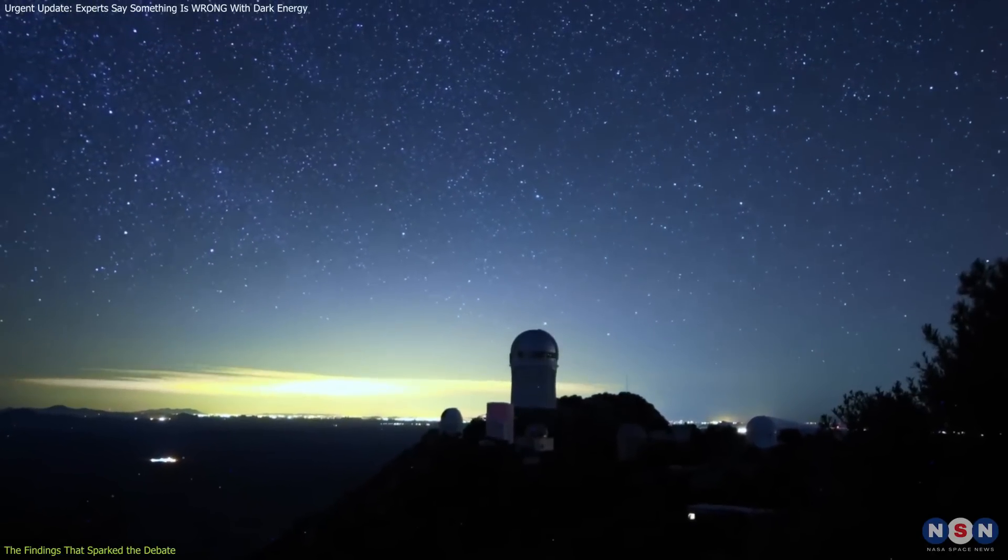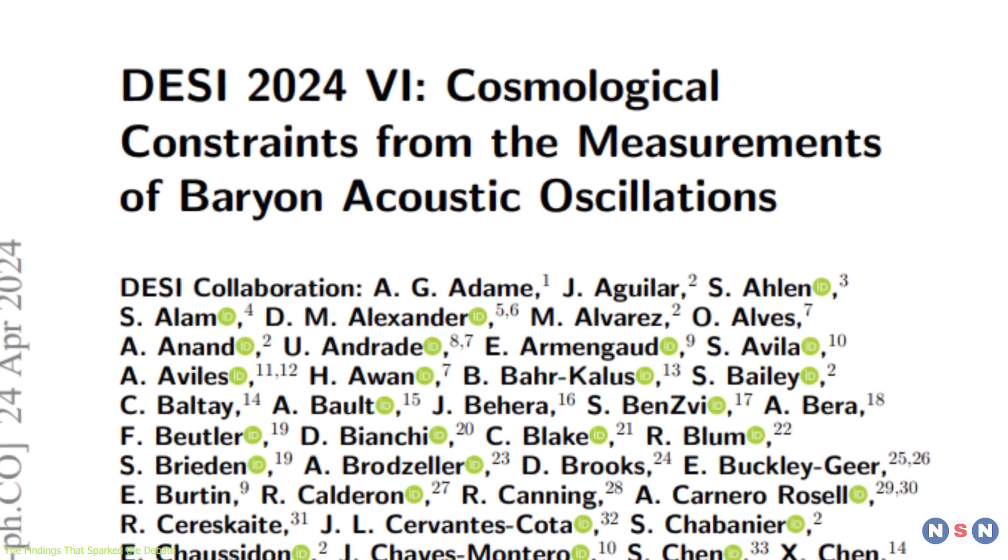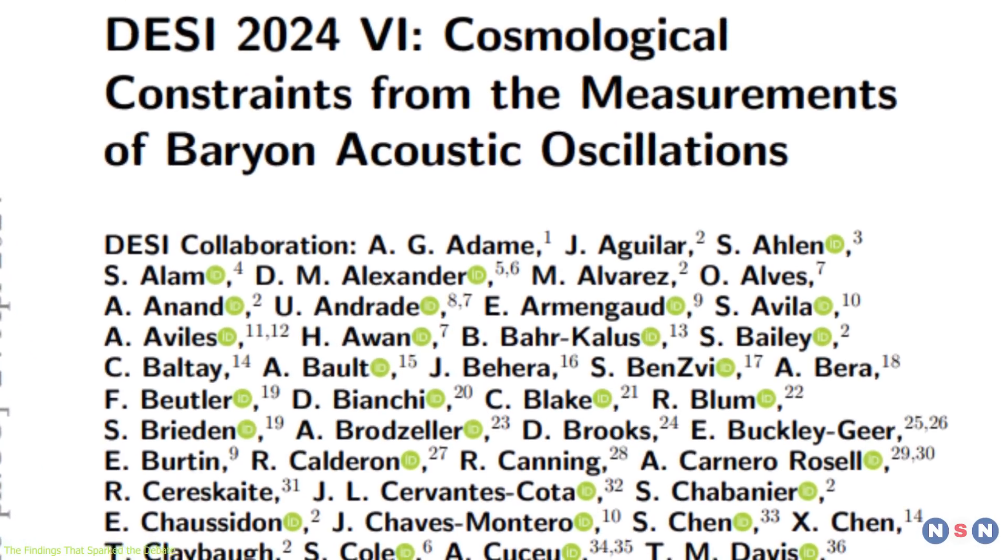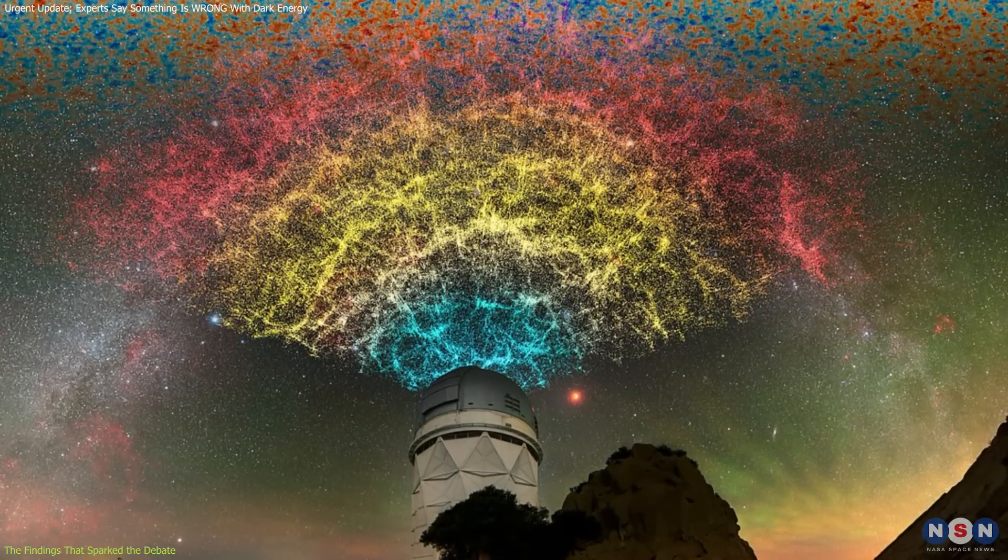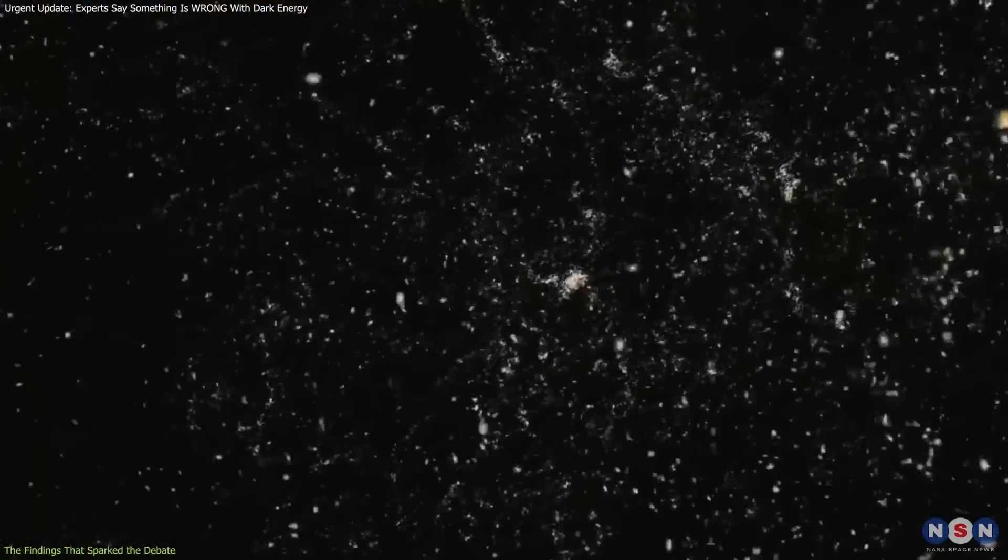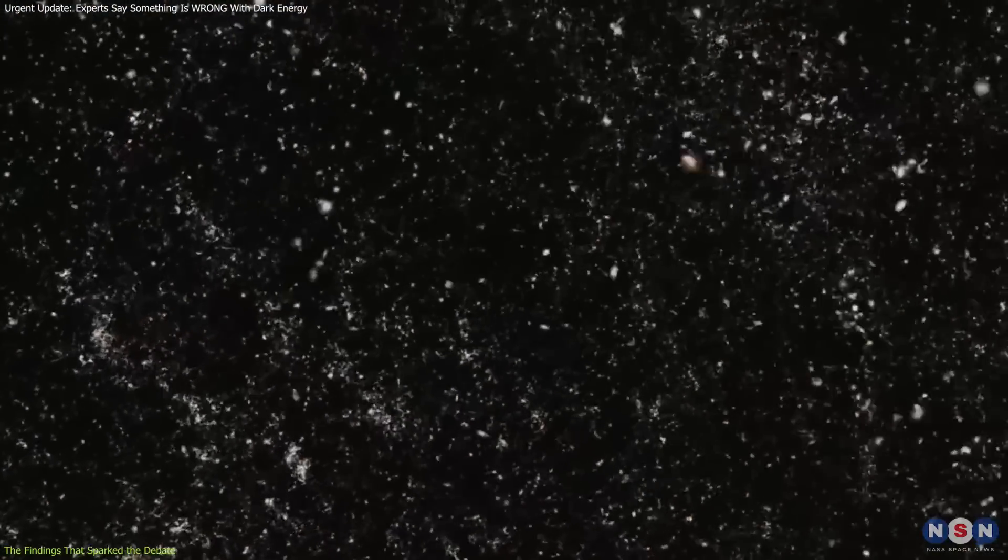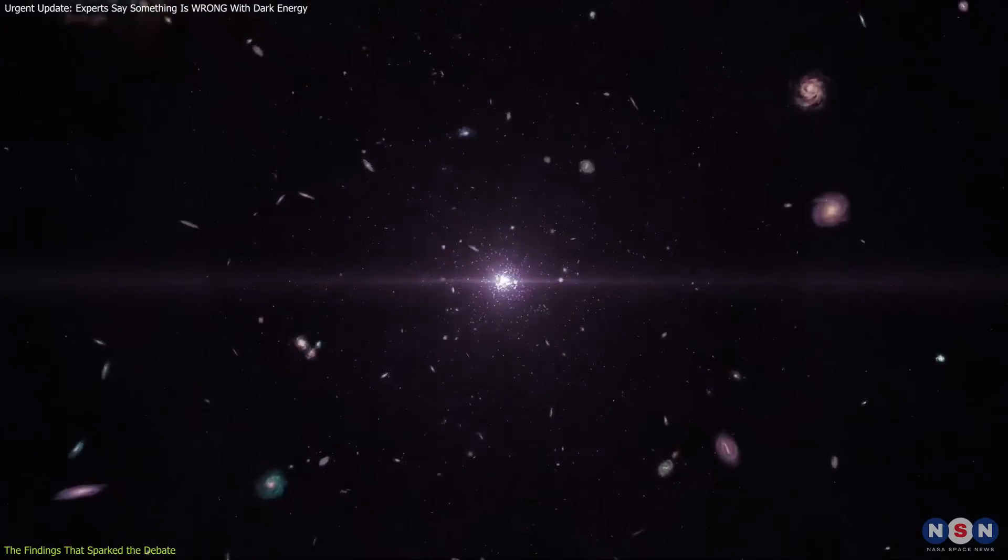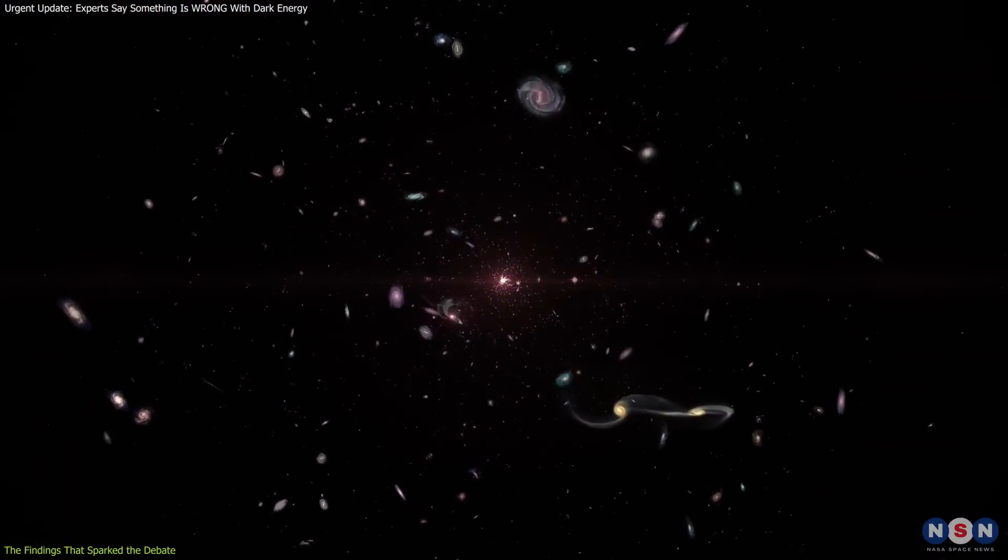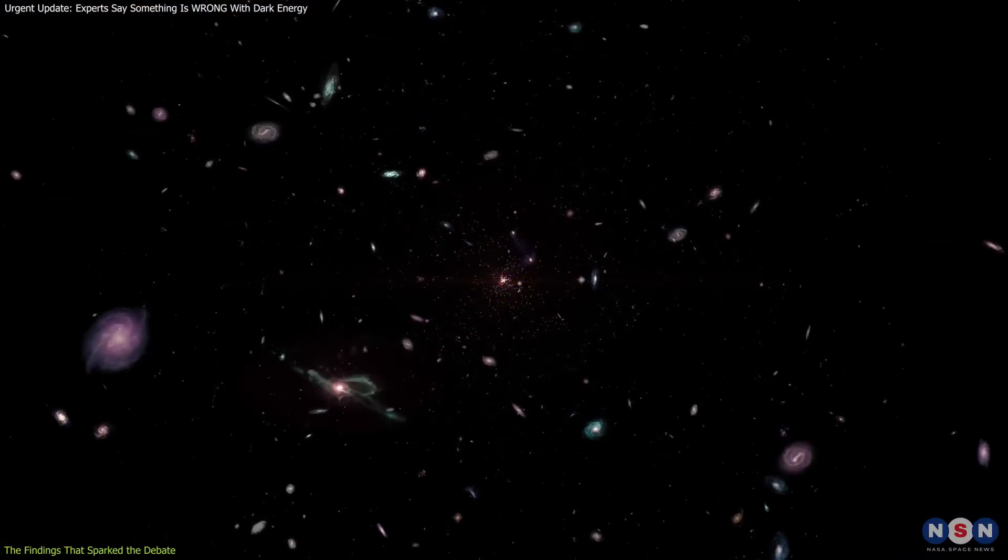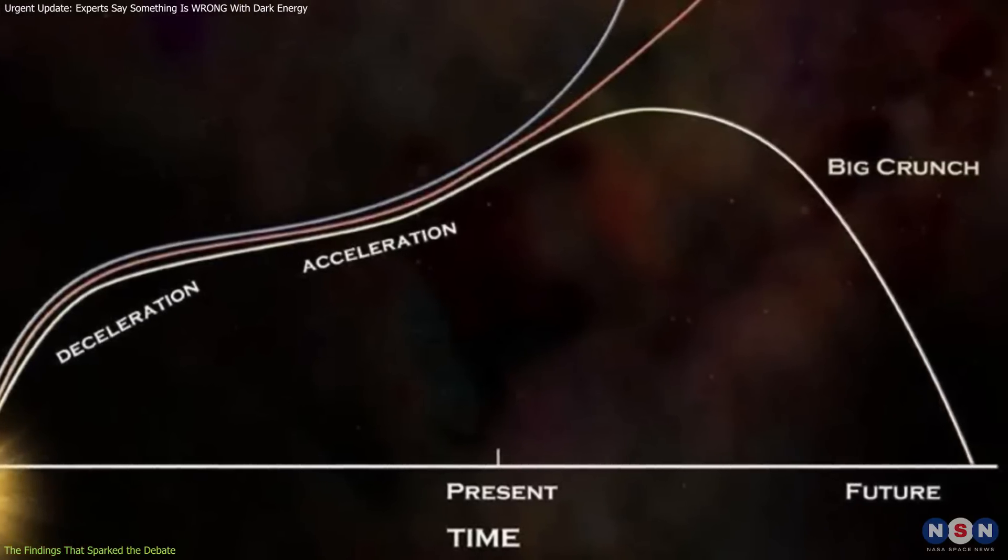But this year, scientists working on the DES and DESI projects released results that have cosmologists questioning this assumption. Both surveys have been measuring the universe's expansion with unprecedented precision. DESI, for instance, has mapped over 40 million galaxies across seven slices of cosmic history. It revealed something unusual. Galaxies aren't as spread apart as they should be if dark energy were truly unchanging. Instead, the data suggests that dark energy might be weakening over time.